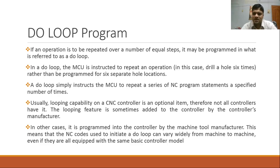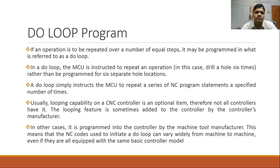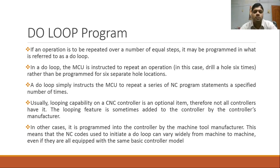The do loop is a further, slightly modified version. We will require a canned cycle to apply do loop. Do loop is used when a pattern hole drilling is required and there are many holes in a typical pattern. In a do loop, the machine control unit is instructed to repeat an operation — in this case, drill a hole five or six times — rather than program for separate hole locations.